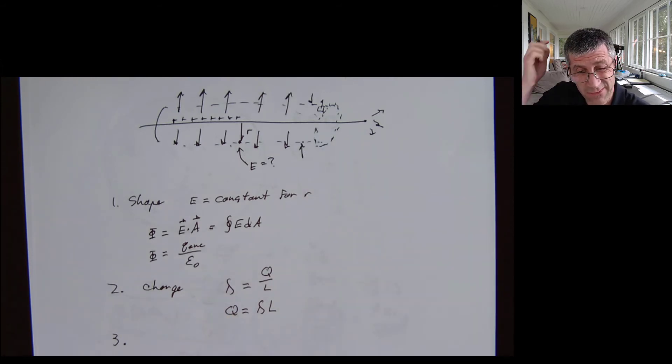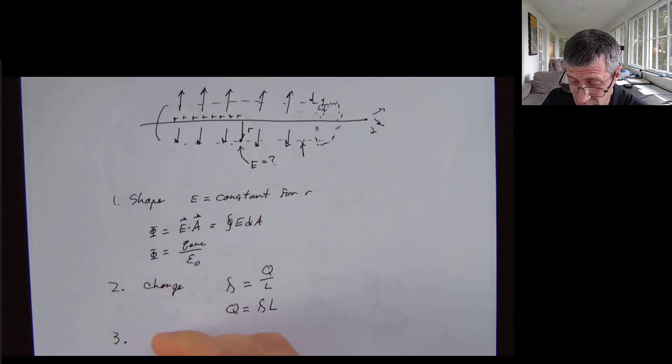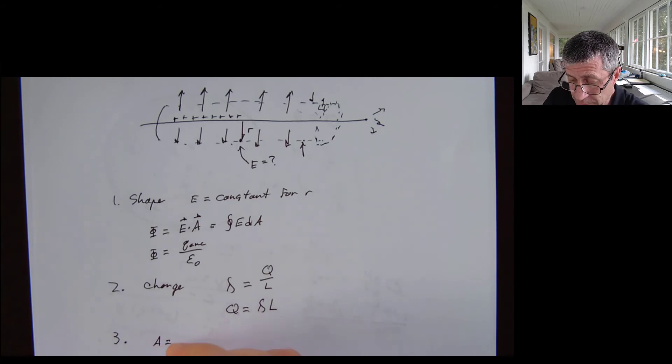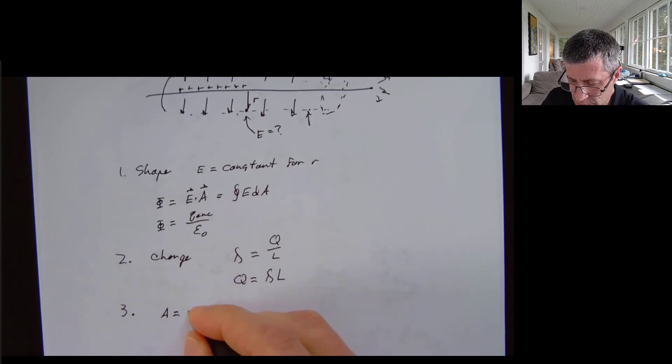So I'm going to look up the formula for surface area of a cylinder, which is going to be the circumference times the length. So my area is going to be the circumference, which is two pi r times the length, which I've decided is going to be L arbitrarily.